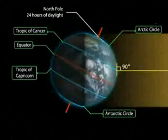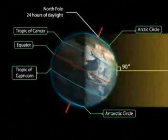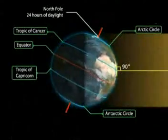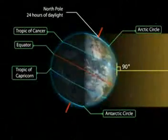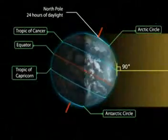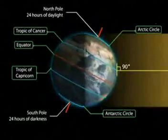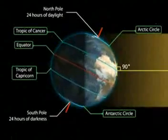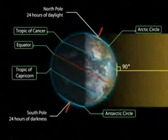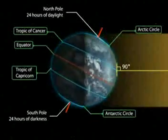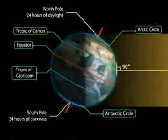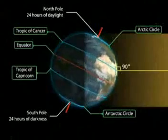Besides, there are 24 hours of daylight at the Arctic Circle, and 24 hours of darkness at the Antarctic Circle.